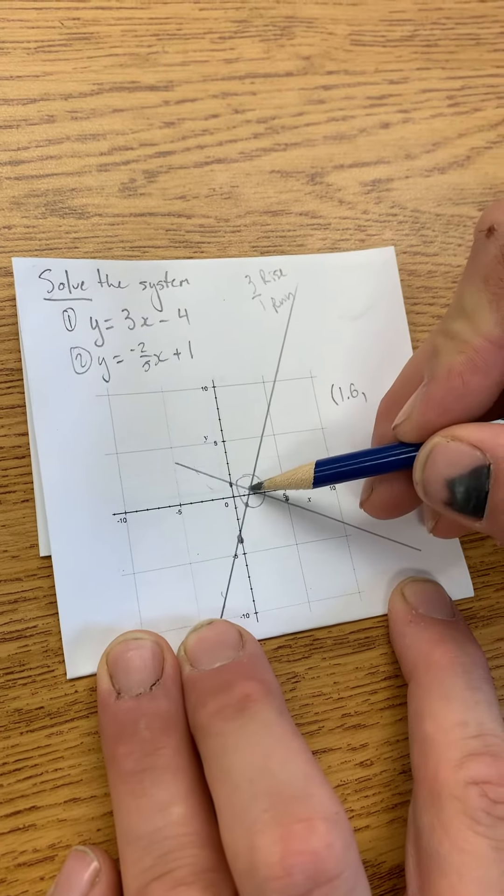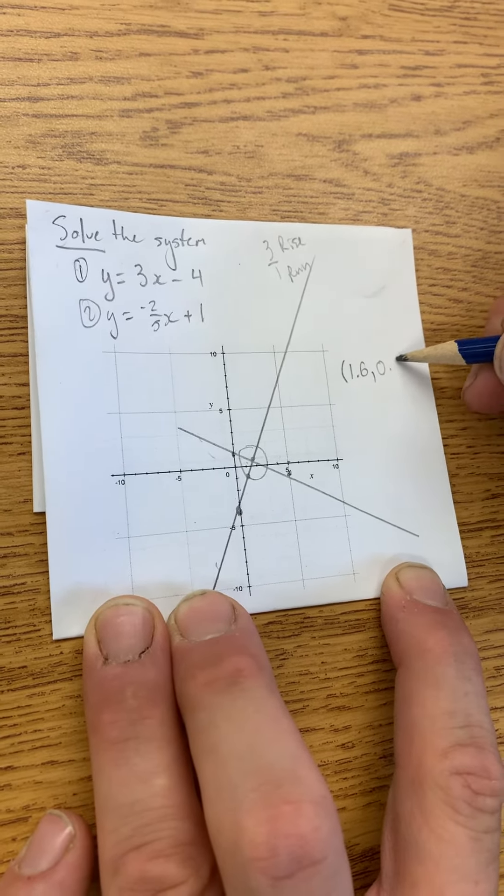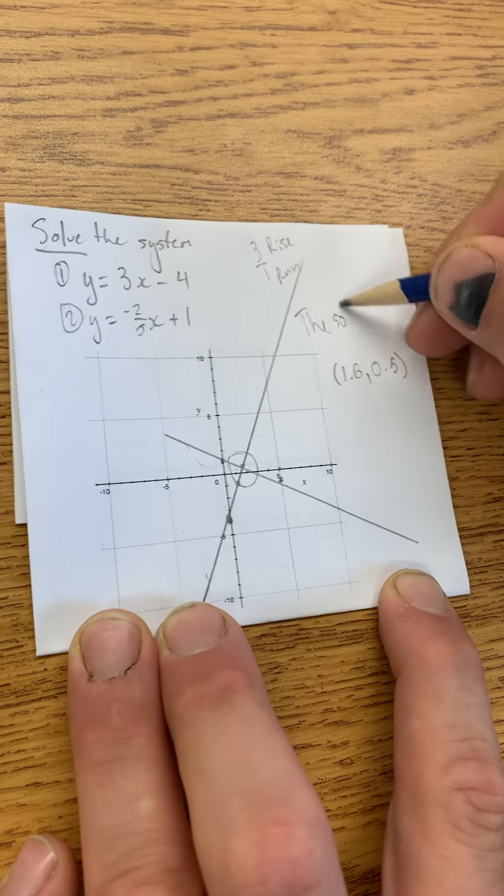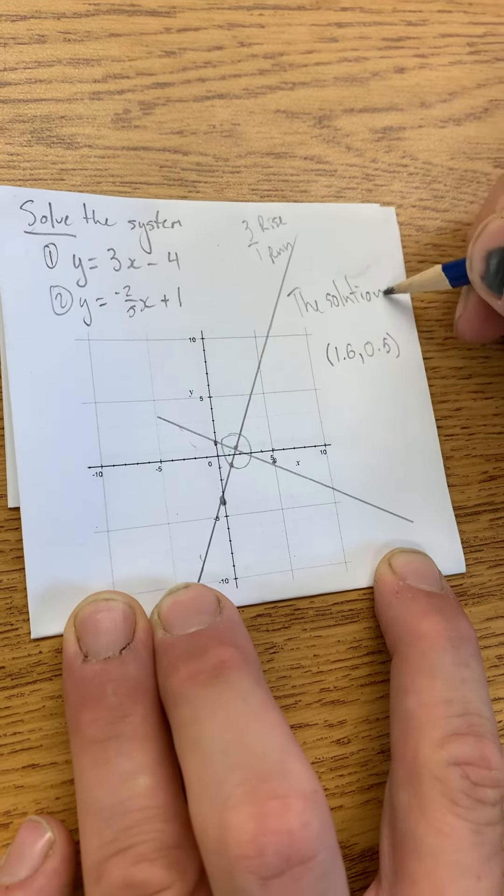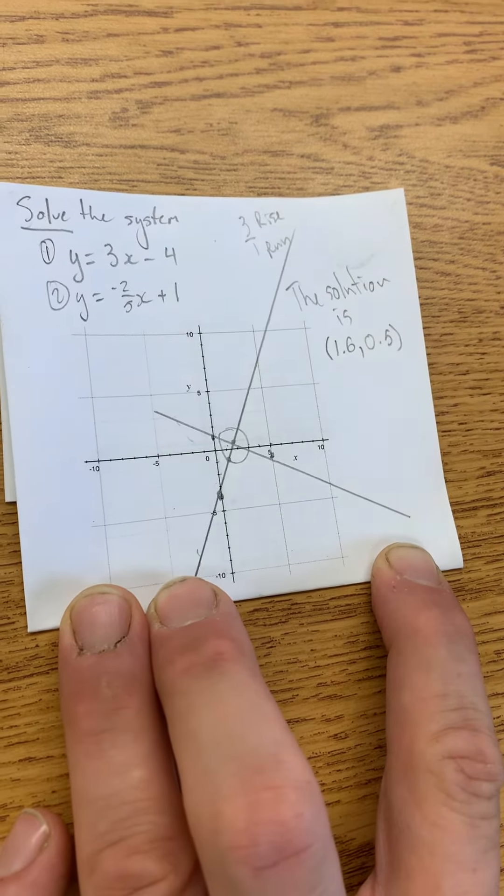And then when I look at the y-coordinate, it's between 0 and 1. It looks like it's about halfway. So let's go 0.5. And so we would say the solution is the coordinate 1.6, 0.5.